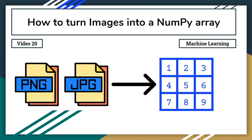Hello everyone and welcome to this video. This is the last video of our NumPy library series. In this video we are going to be learning how to turn images into a NumPy array. This is very useful because in machine learning, machines don't know what pictures are — they can only read numbers. NumPy arrays are full of numbers, so we can feed the machine this array.